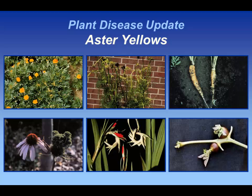This organism is technically called a phytoplasma — it's a bacterium-like organism — and can infect on the order of 300 to 400 different species, and that's in roughly 40 plant families.